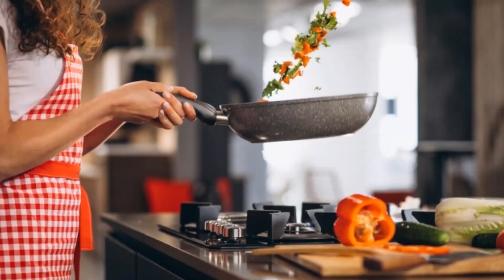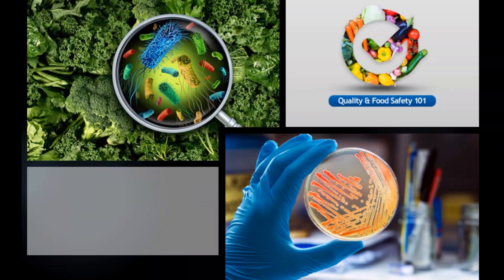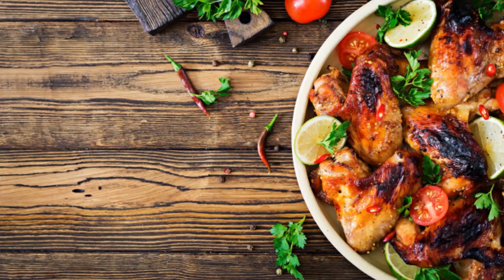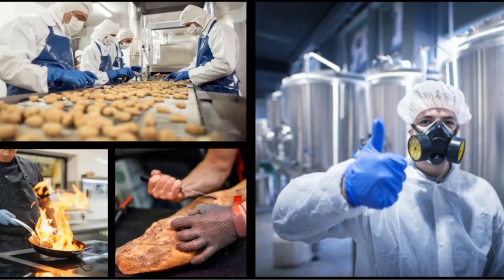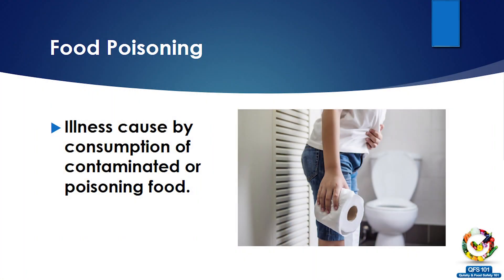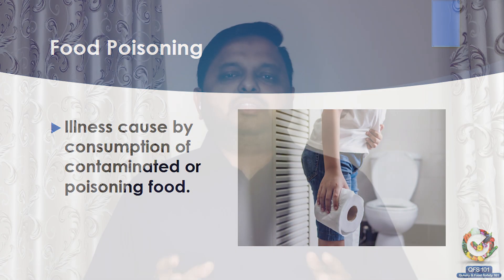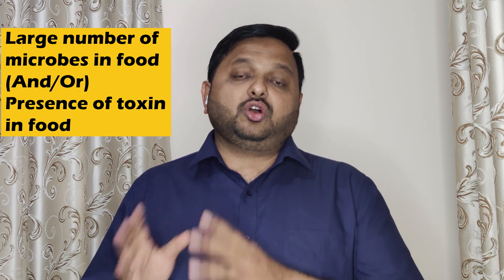Let's start. Food poisoning is an illness which is caused by consumption of contaminated or poisonous food, which may be a result of a large number of microorganisms already in the food, or it might be due to presence of toxin in the food. All this has been covered in the multiplication video as I suggested before.